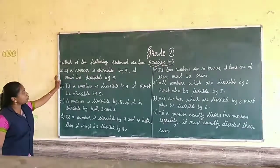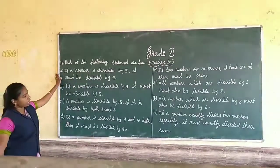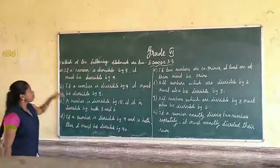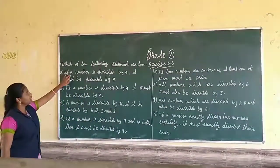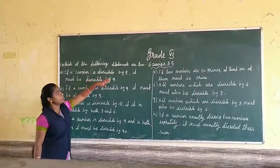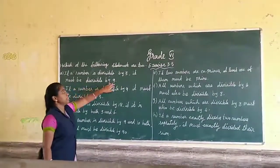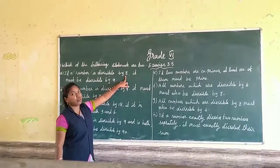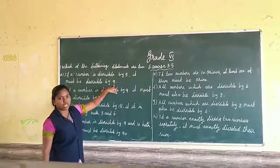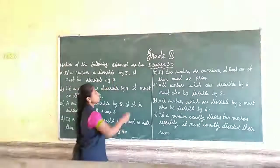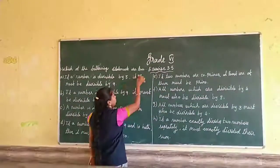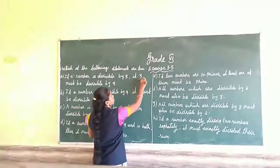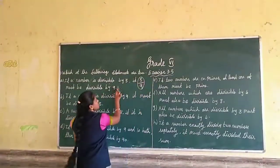They are giving some statements. The first statement is: if a number is divisible by 3, it must be divisible by 9. To check this, I will take the number 3. Now, 3 is divisible by 3, but it is not divisible by 9. So this statement is false.